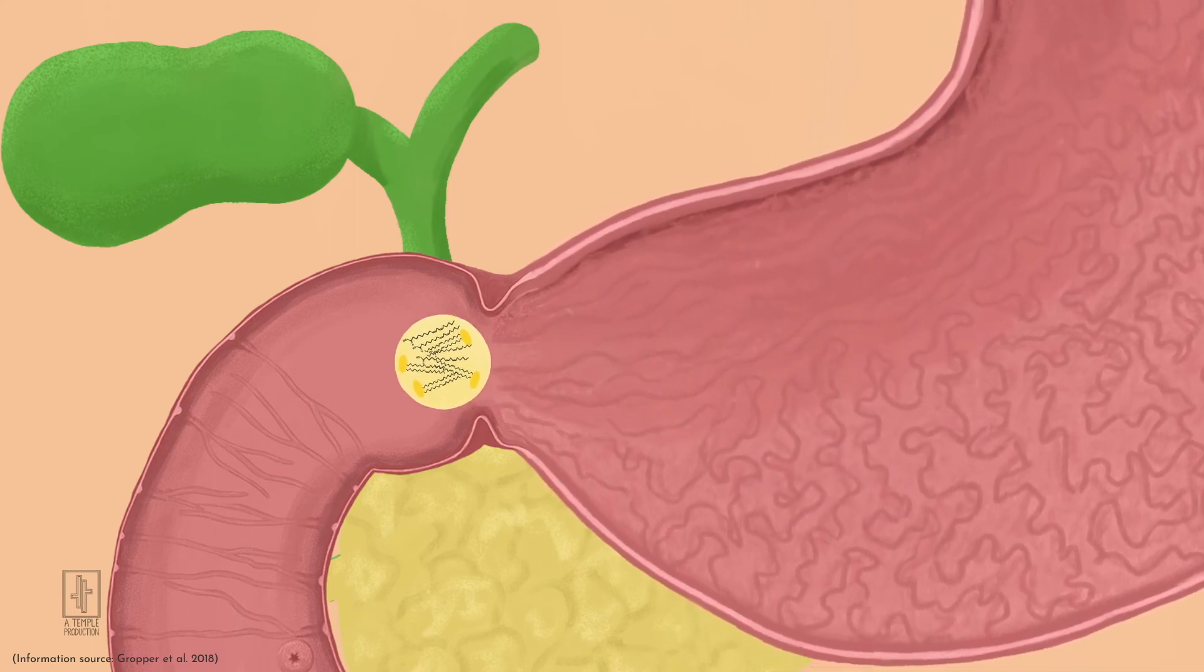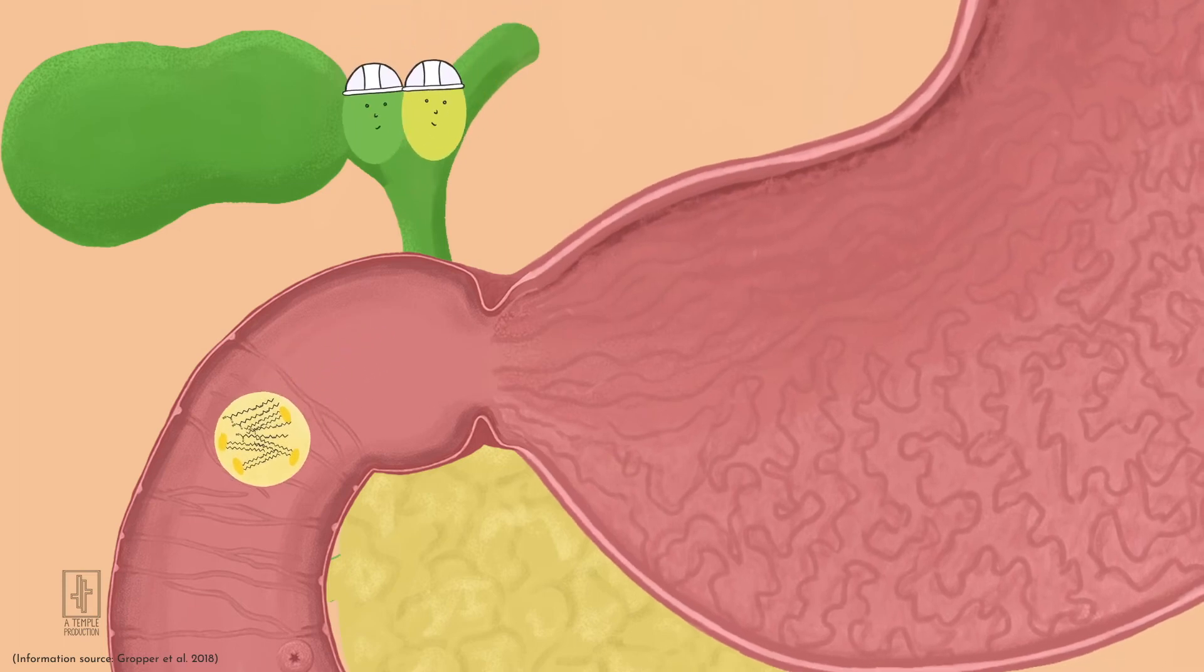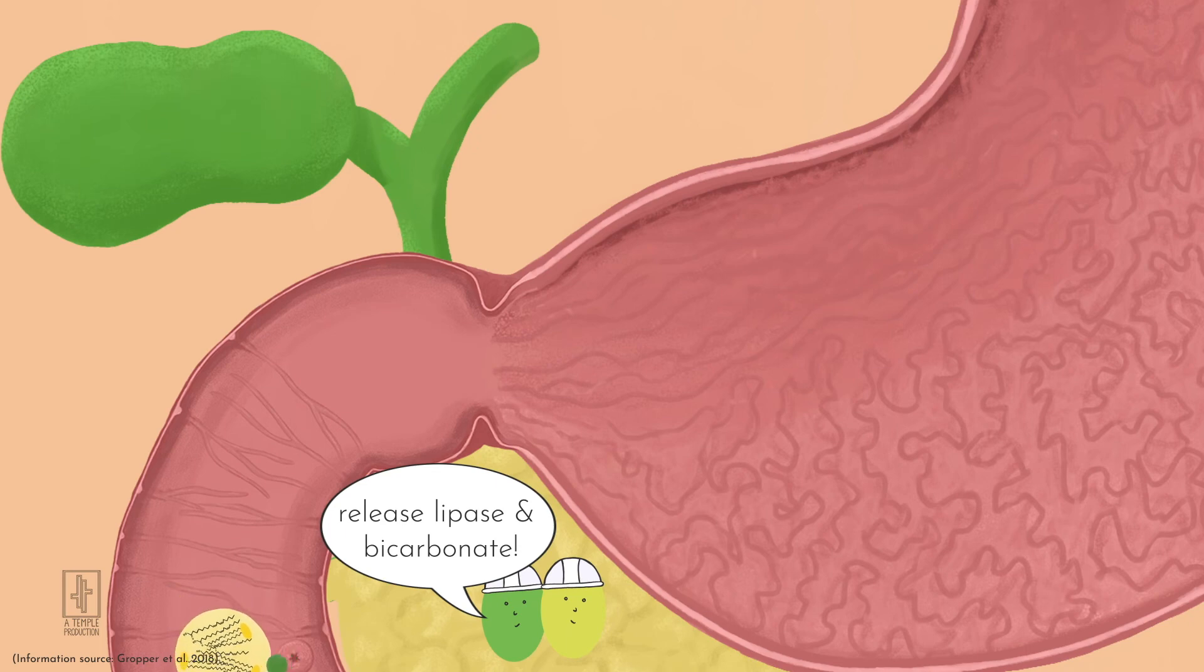the two hormones from earlier, CCK and secretin, tell the gallbladder to release bile and the pancreas to release pancreatic lipase and bicarbonate.